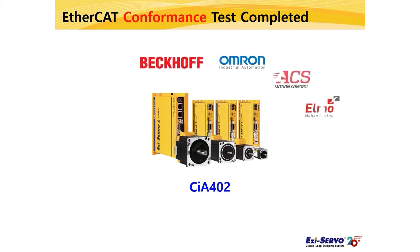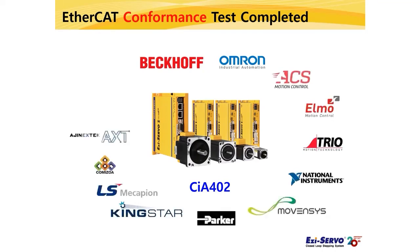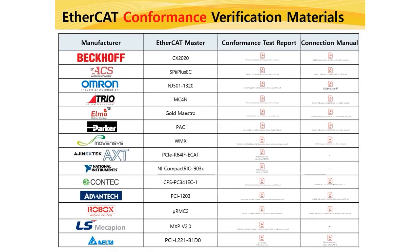By compatibility testing with each master company, the connection method and operation of EtherCAT functions with various masters were verified. The verification results are summarized in a table — including conformance test reports and connection manuals for each master. Demonstrations of Fastech EtherCAT products were delivered to each master company, and the master company directly conducted the conformance test.